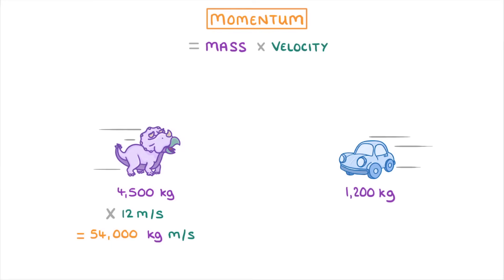Whereas if we had a 1,200 kg car travelling at 25 m per second, then its momentum would be 1,200 x 25, so 30,000 kg m per second.